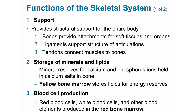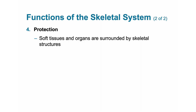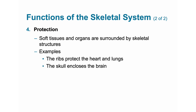4. Protection. Skeletal structures surround many soft tissues and organs. The ribs, or costals, protect the organs of the thoracic cavity, namely the heart and lungs. The skull encloses the brain. The vertebrae shield the spinal cord, and the pelvis cradles delicate visceral digestive and reproductive organs.